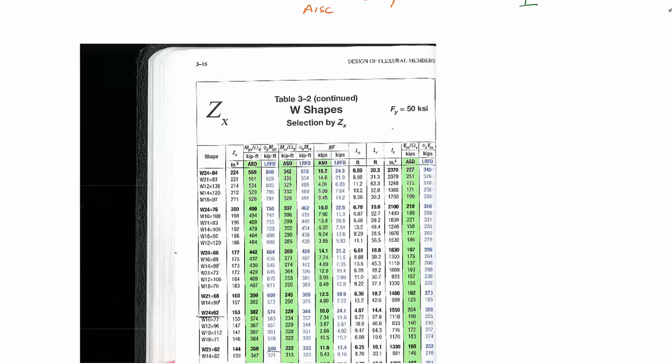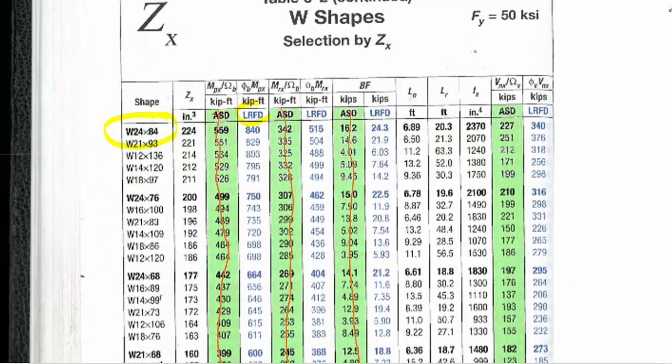In our table 3-2 in the AISC manual, we'll see a shape. Let's take a shape, for instance, the W24 by 84. We're looking at LRFD, so we're not really looking at these green columns here. We're looking at the blue columns. When we look closely here.